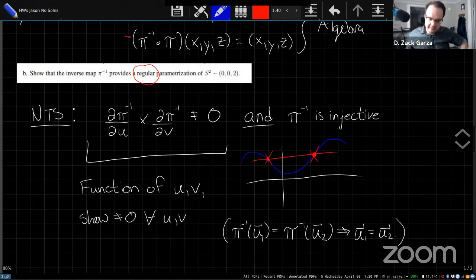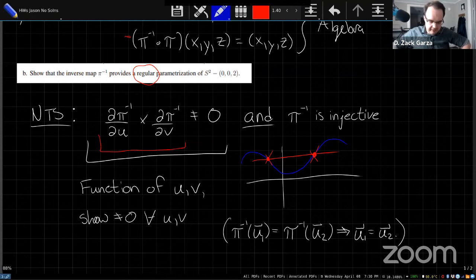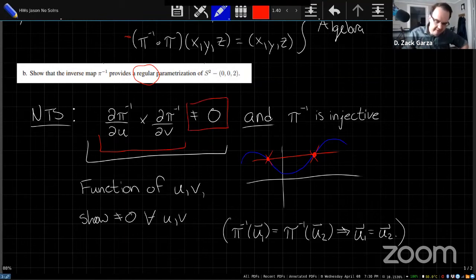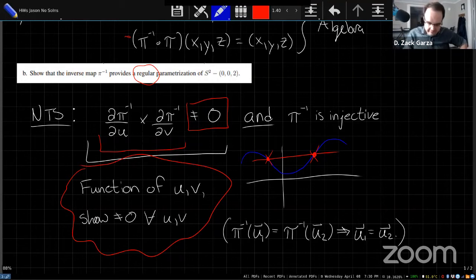So here's what you need to show. We're taking pi inverse as our map. And this condition right here says, just take the partial with respect to u, you'll get some vector out of that, take the partial with respect to v, you'll get some other vector, take the cross product of these two vectors, and now just somehow argue that this function is never zero. That's kind of what I'm saying down here at this part.